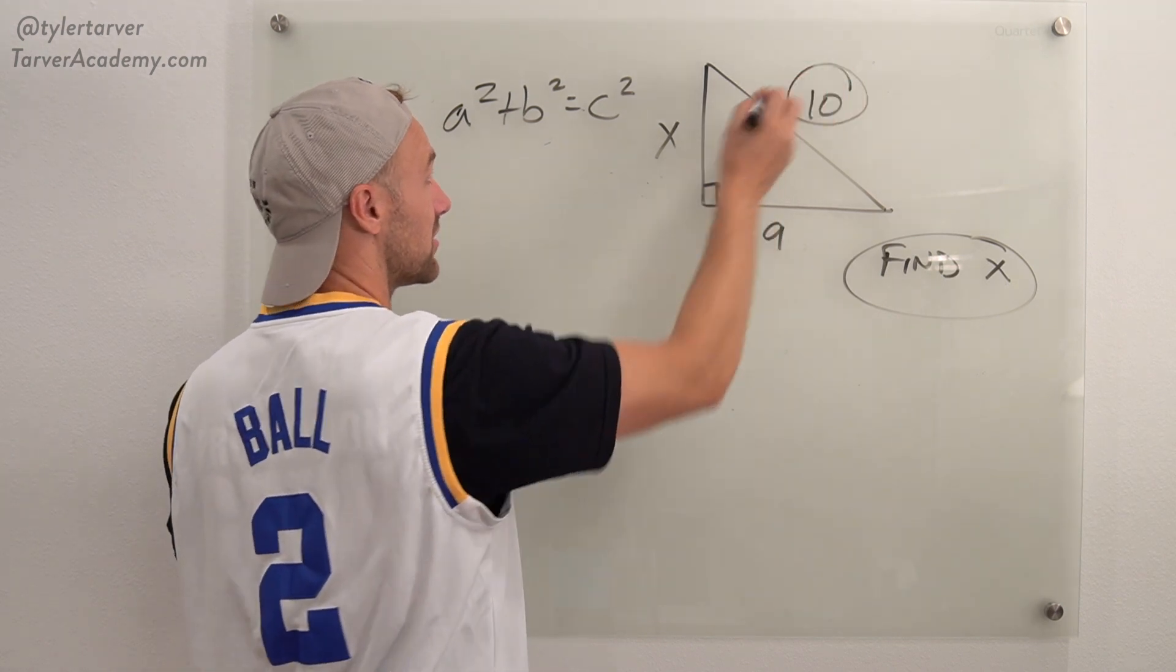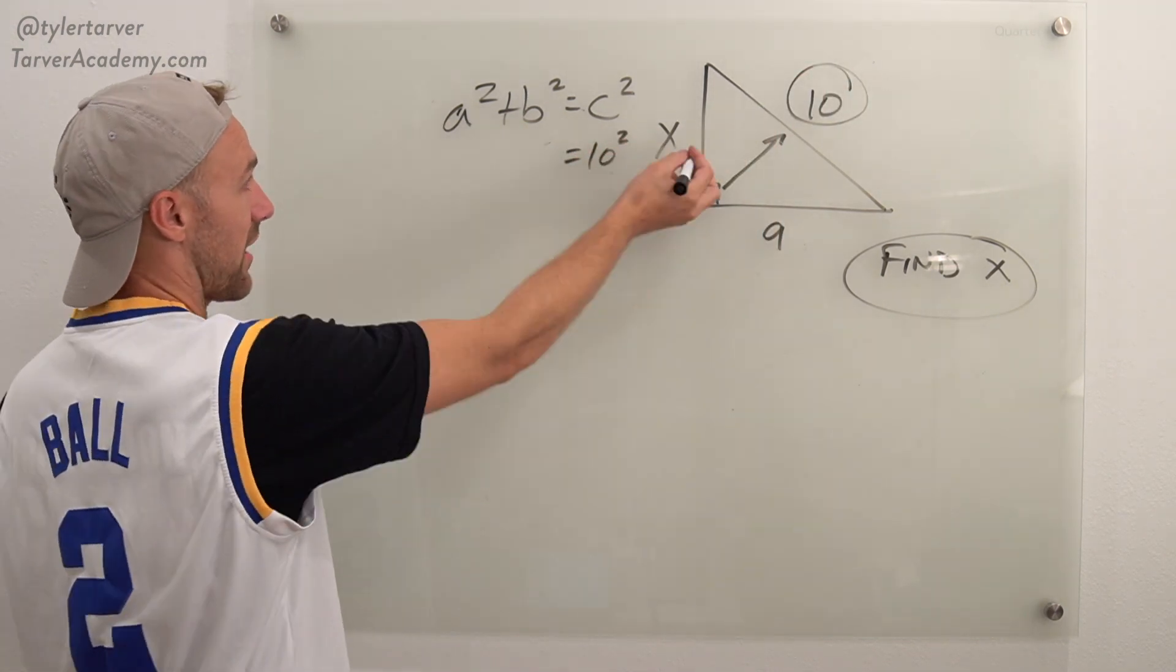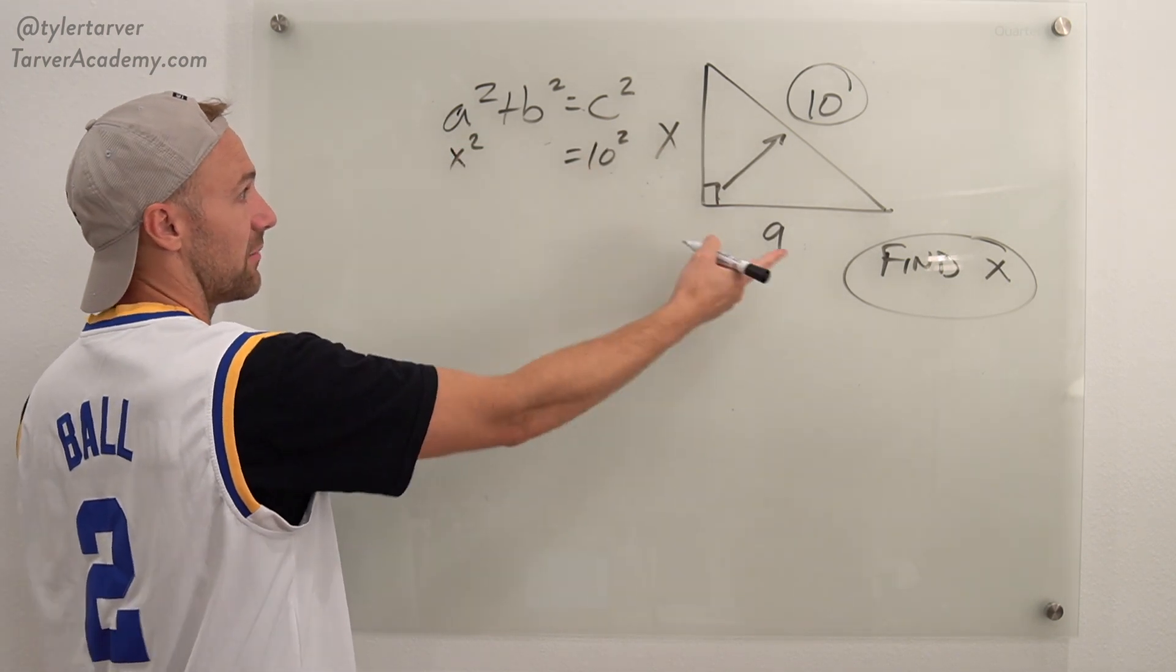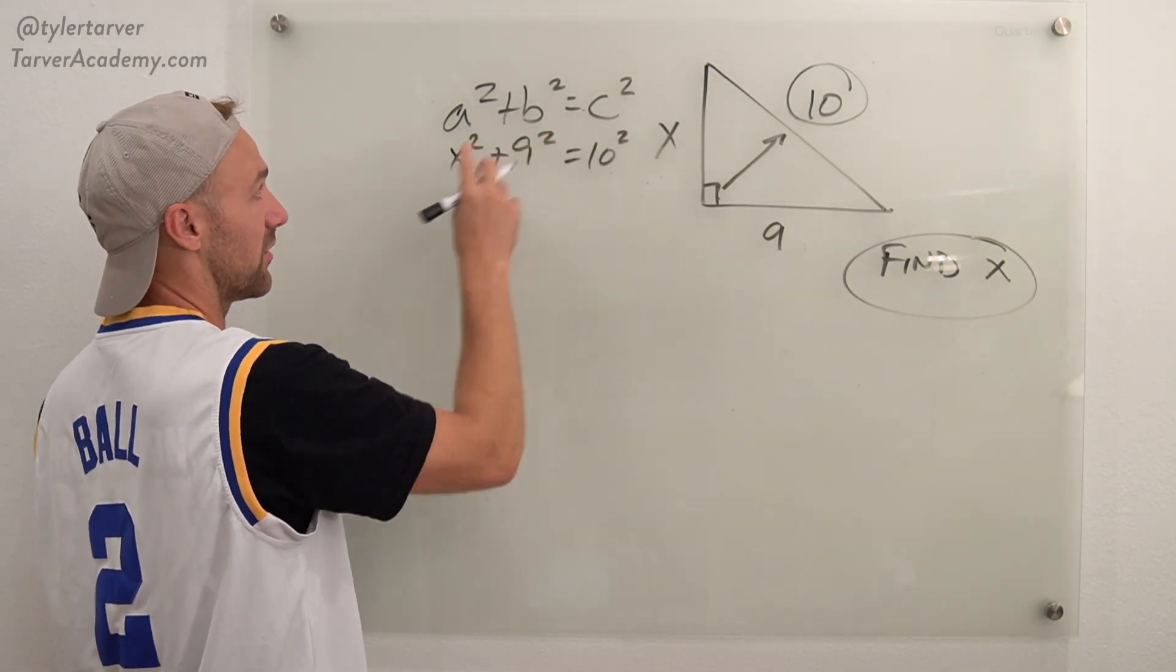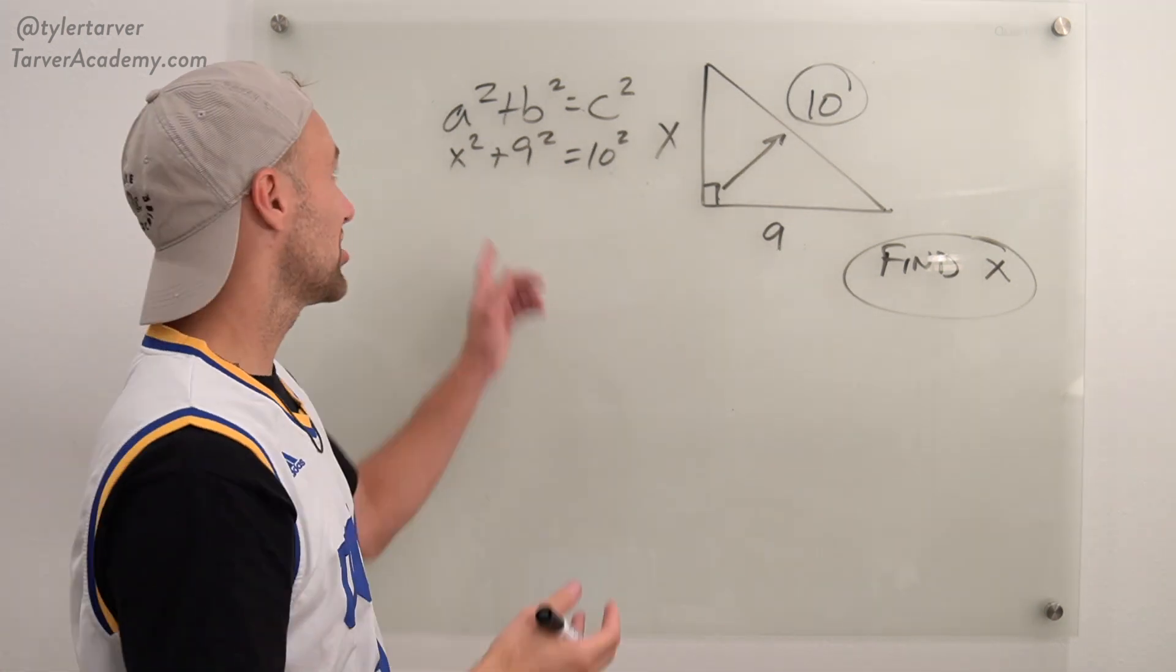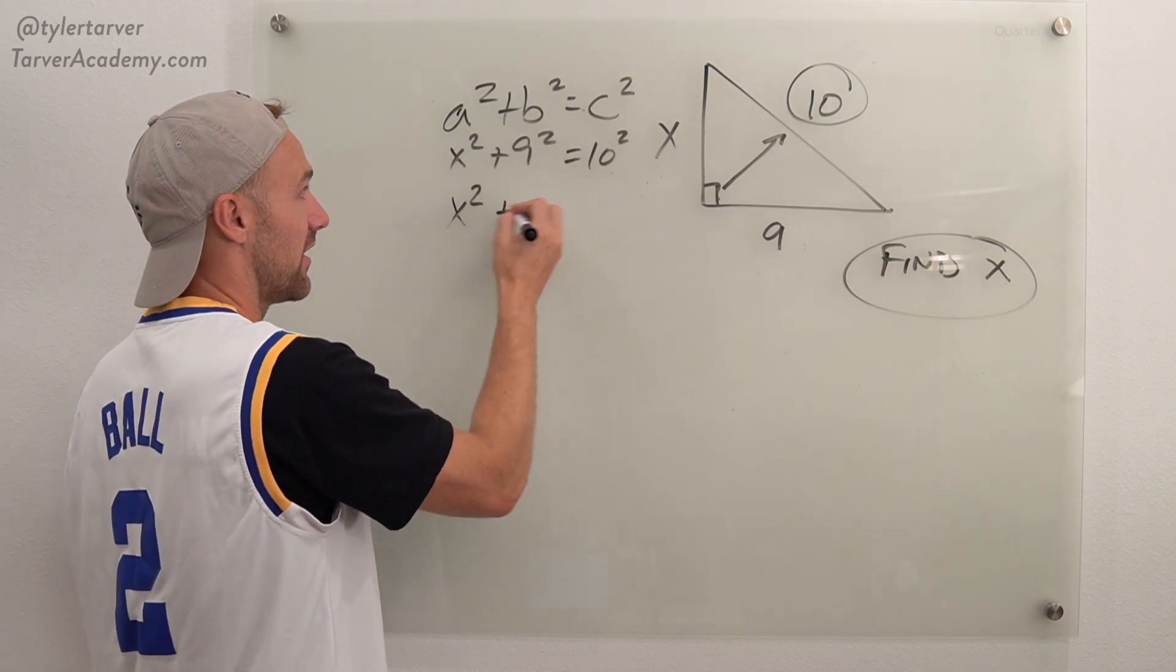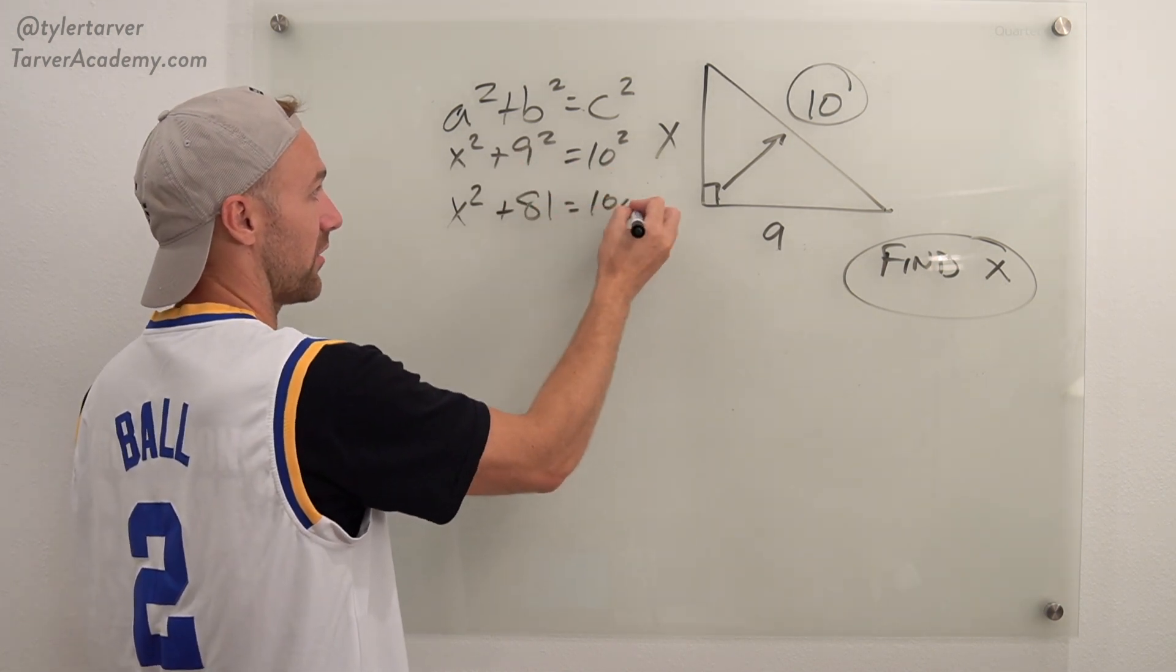We know this is our hypotenuse so I'm going to make that 10 squared. Other two doesn't matter. So I'll make this my A. Make this my B. So now it's X squared plus 9 squared equals 10 squared. Now we're just solving for X. So we've got X squared here. 9 squared is 81. We've got 10 squared is 100.